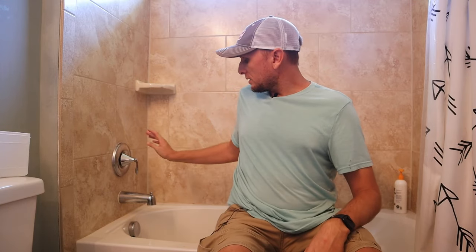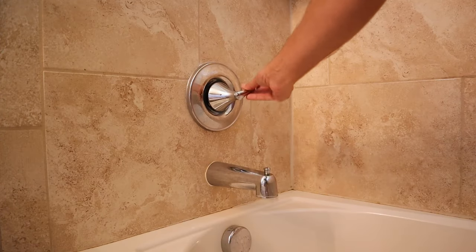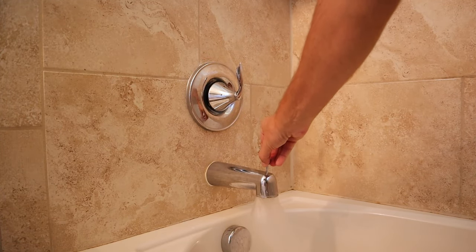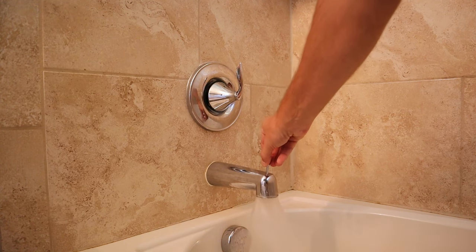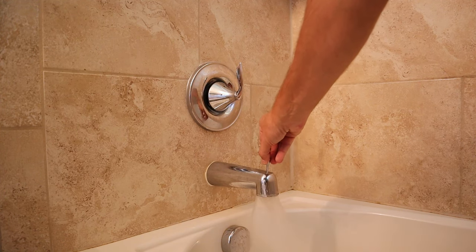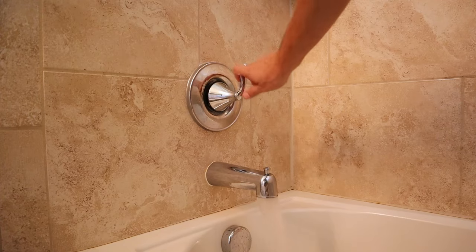I've got a bathtub shower combo, but when I turn on the water and I want to engage the shower by pulling up on the gate here, when I pull up on this, it doesn't engage the shower. Water continues to run down through the tub spout itself.